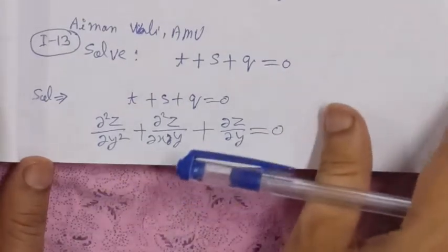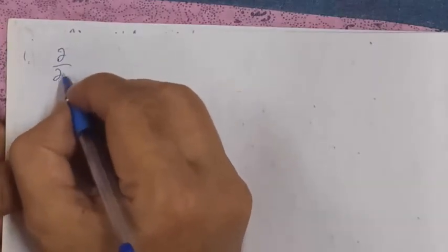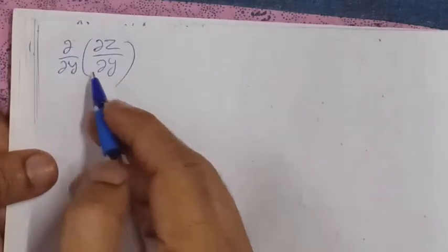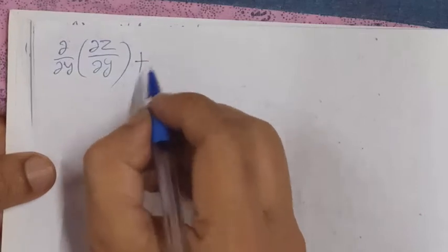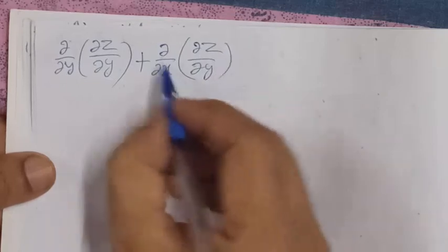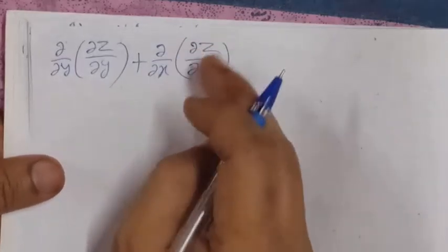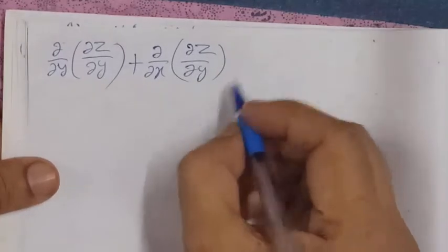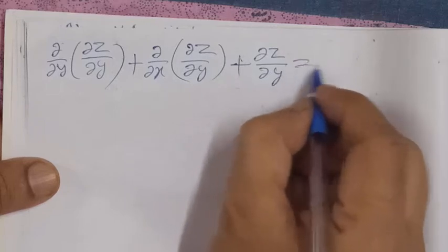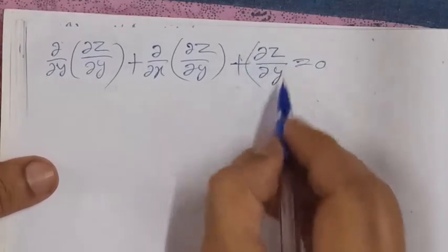Now let's see how to solve this problem. We can write this form by writing del over del y of del z over del y, which is the second derivative with respect to y. The next term, the second derivative can be written as del over del x of del z over del y. And the last term is written as del z over del y equals zero.